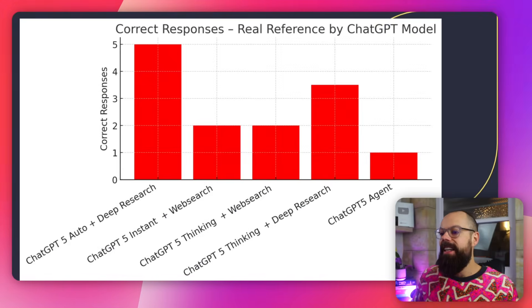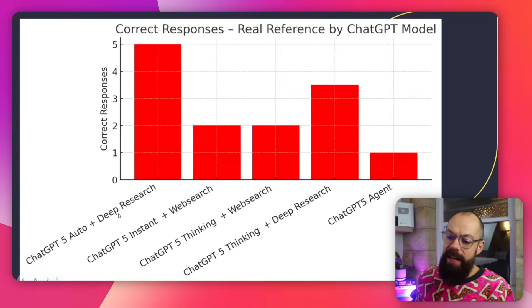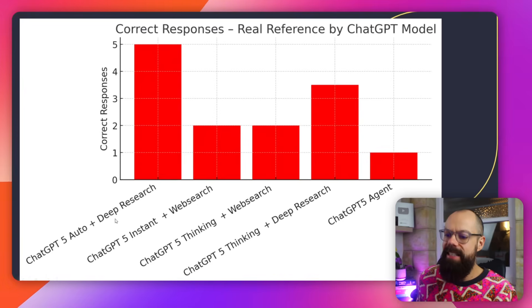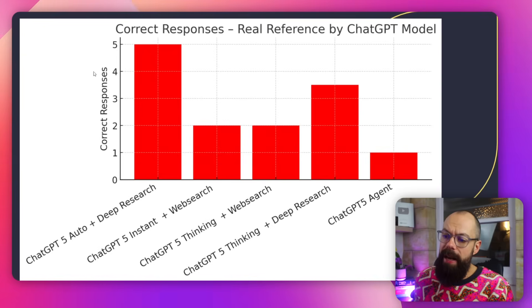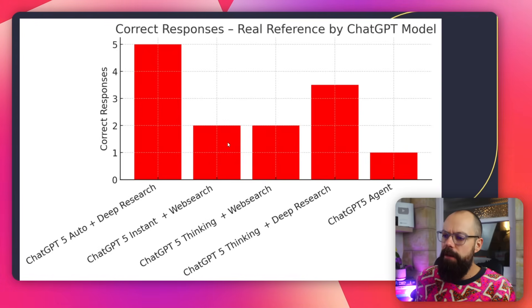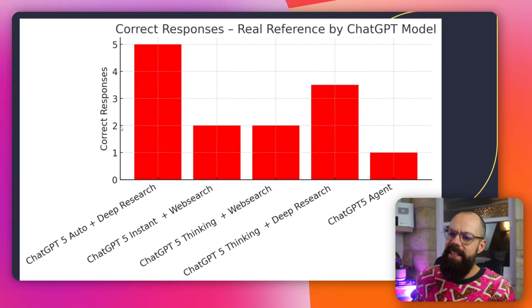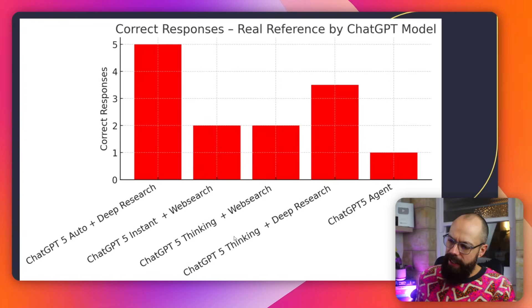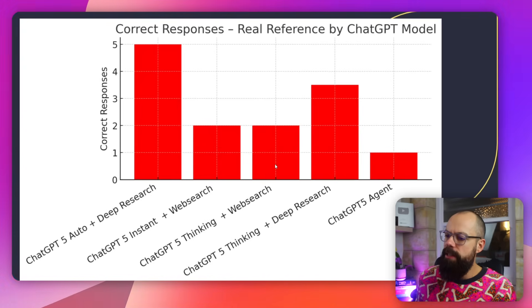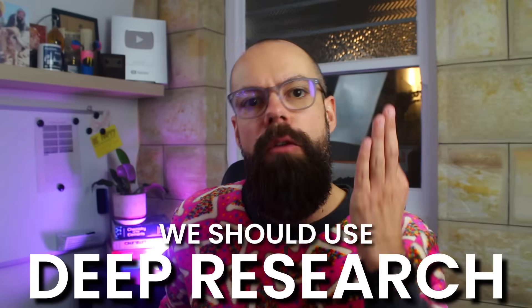Here are the results. First, first order hallucinations — does the paper actually exist? ChatGPT Auto plus deep research was great. Deep research consistently results in better responses. ChatGPT 5 Auto selects the best model for you and provided 100% correct responses across five randomly selected papers. ChatGPT Instant plus web search only got two correct out of five. ChatGPT Thinking with deep research does better than with web search alone, telling us we should be using deep research if we want real references.